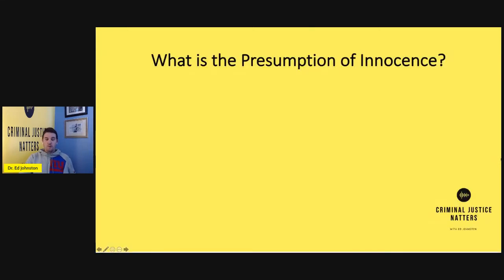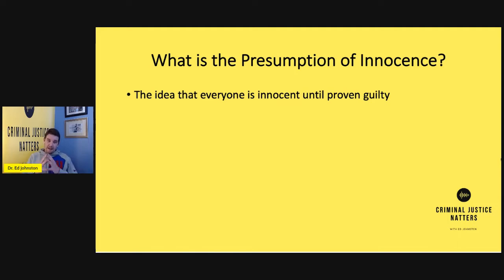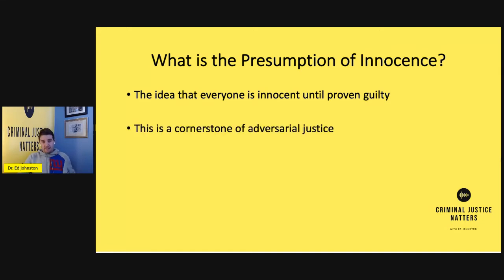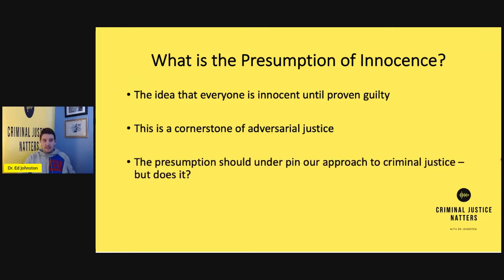So what is the presumption of innocence? In a nutshell it's the idea that everybody is innocent until proven guilty. This is what's called a cornerstone of adversarial justice. All of our justice system mechanisms start from the idea that everyone is presumed innocent. This presumption should therefore underpin our approach to criminal justice, but I think we should ask some very serious questions of whether or not it actually does.